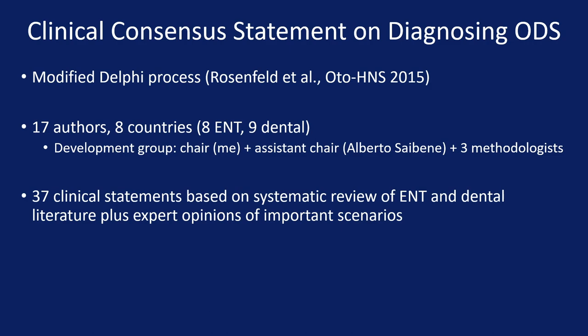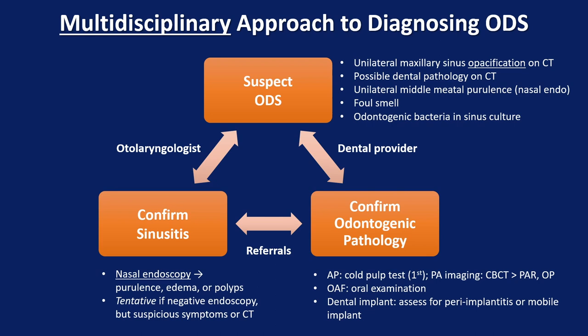Here's figure one from the consensus paper, highlighting the multidisciplinary approach to diagnosing odontogenic sinusitis. These patients are frequently seen by a variety of physicians, but most commonly otolaryngologists or dental providers. It's really important to understand it starts with a suspicion of odontogenic sinusitis, and then, based on that suspicion, you refer these patients to the appropriate provider for disease confirmation — either of the sinus disease or the dental disease. There are five key clinical features shown to be more associated with odontogenic sinusitis compared to other types of sinus disease.